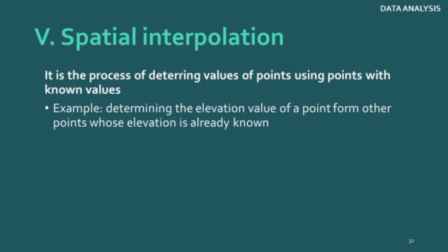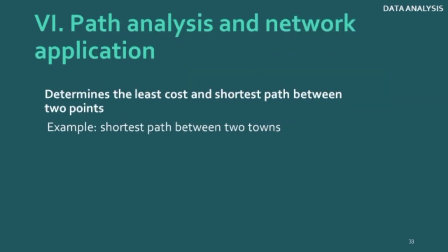The fifth analysis method is spatial interpolation — the process of determining values of points using points with known values. If you have a set of points with known elevation, you can get the elevation of other points with unknown values. For buildings in a particular city, if you have known and unknown areas, you will get elevation and section values using a single grid. The last analysis method is path analysis and network application, which determines the least-cost and shortest path between two points. It is mainly used for logistics — transportation of goods or waste — and can be used to calculate the shortest path between two towns for supply chain or waste plant networks.